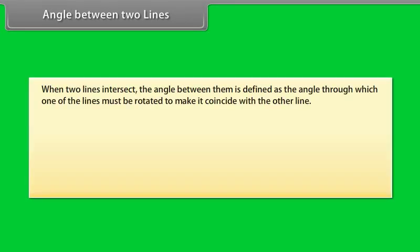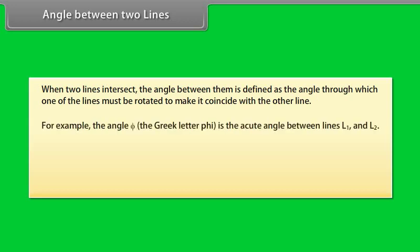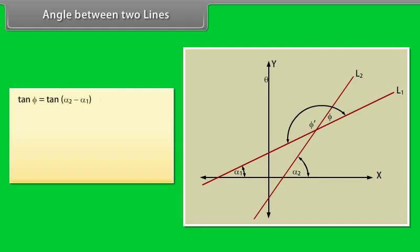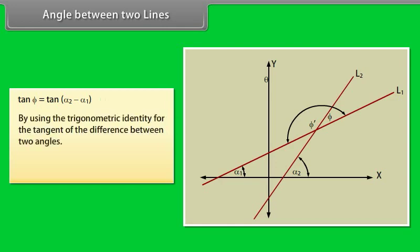Angle between two lines: When two lines intersect, the angle between them is defined as the angle through which one of the lines must be rotated to make it coincide with the other line. The acute angle phi is the angle between lines L1 and L2. Alpha 2 equals alpha 1 plus phi, therefore phi equals alpha 2 minus alpha 1. From the slopes, tan(phi) equals tan(alpha 2 minus alpha 1), giving tan(phi) equals (tan alpha 2 minus tan alpha 1) divided by (1 plus tan alpha 1 times tan alpha 2).